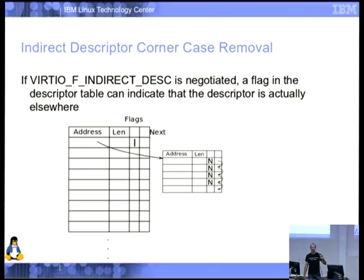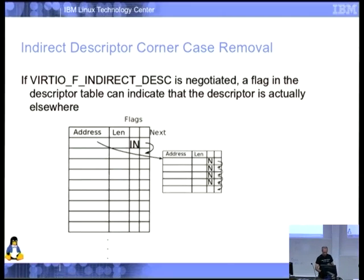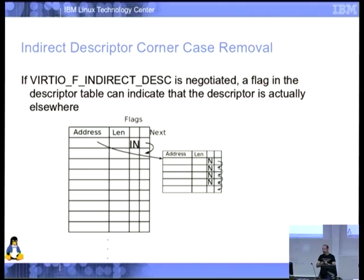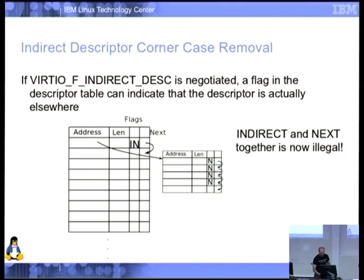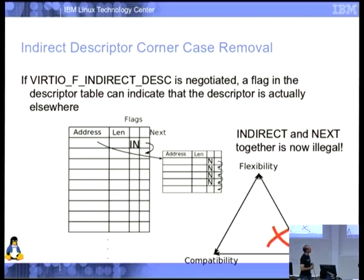We had a problem: because devices were afraid to ask for large rings in case they couldn't get them, they couldn't ask for more than about 256 descriptors, so block device performance suffered. Indirect was awesome for this. But we had a 'set indirect AND next' combination — first go down to the indirect table, then when that runs out follow the next chain — which could be direct or another indirect. No one ever used it, and it made implementation much harder. So I just ripped it out: simplicity wins.